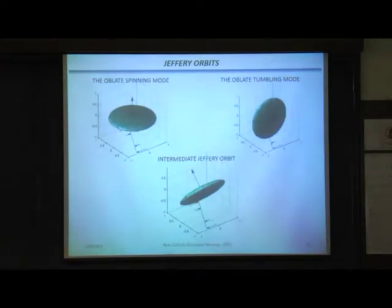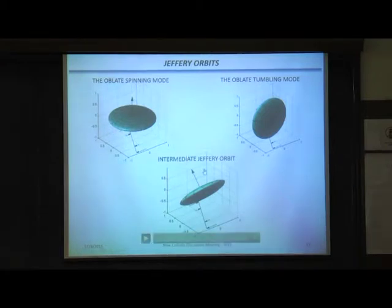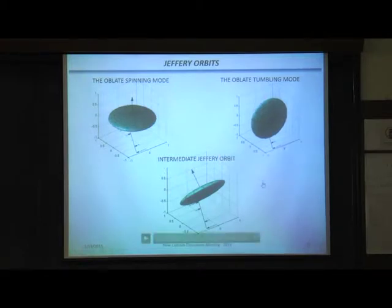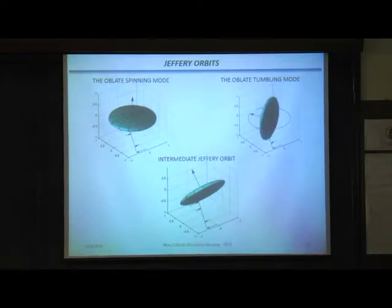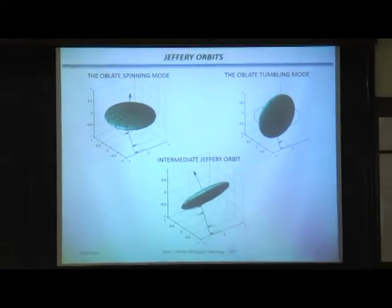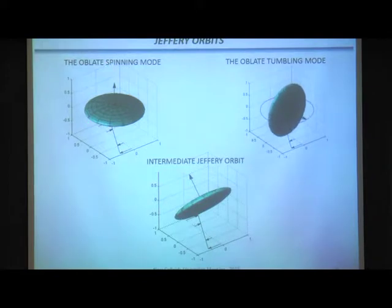There are two key modes: the spinning mode, where an oblate spheroid simply spins about its symmetry axis like a sphere would; and the tumbling mode, where the orientation vector is in the plane of shear. In the tumbling mode, the spheroid moves very slowly when aligned with the flow, then rapidly flips across, spends a long time in the aligned phase, and flips again. The spinning-tumbling transition is very similar to the coil-stretch transition in polymer physics.